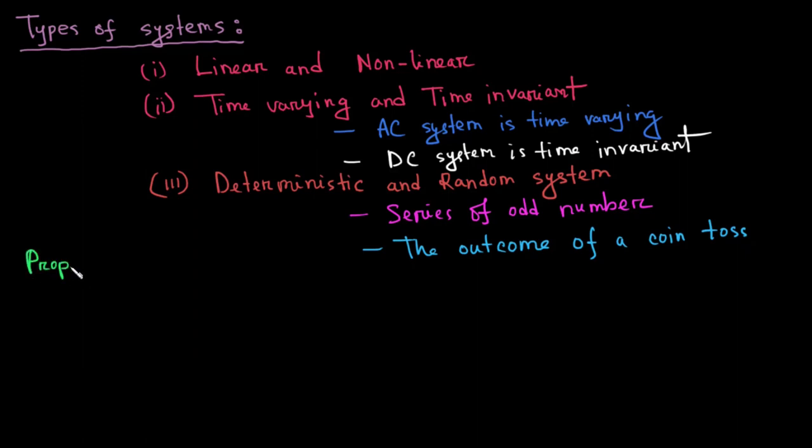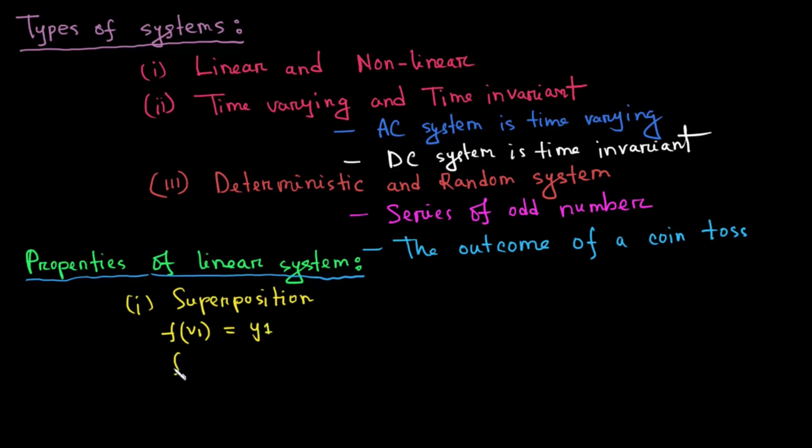Let's talk about the properties of a linear system. A linear system has two properties. Number one is the superposition property and the number two is the homogeneous property. According to superposition property, if you perform an arithmetic operation with the input samples, the same arithmetic operation will be translated to the corresponding output samples. For example, if you add two input samples, v1 and v2, the output y1 and y2 will also be added.